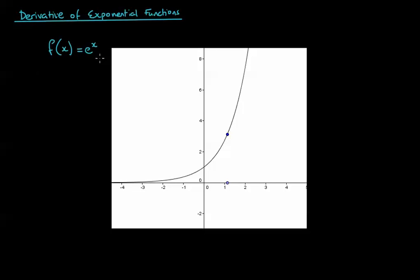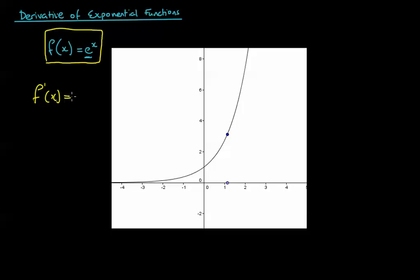The funny thing about this particular number e is that the actual gradient function — the derivative of f of x equals e to the x — is actually just e to the x. It's exactly the same. So the derivative of e to the x is e to the x.